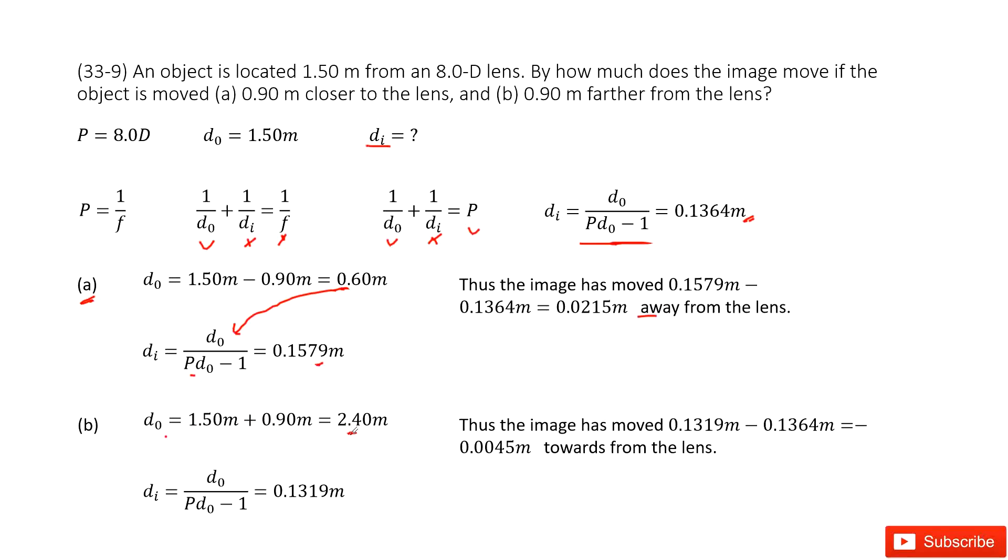And very similarly, we can get the image distance for part b. Input all the given quantities, get the answer there. Now also find the gap between the original image distance and the image distance at part b. See the gap between them? We find the answer there.